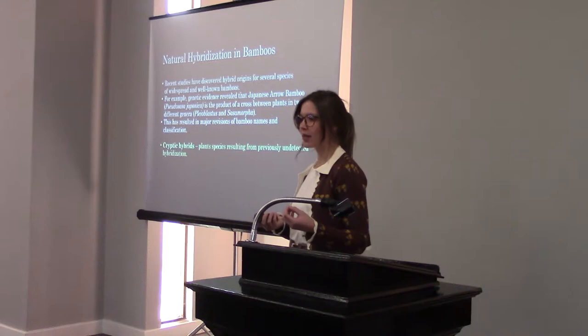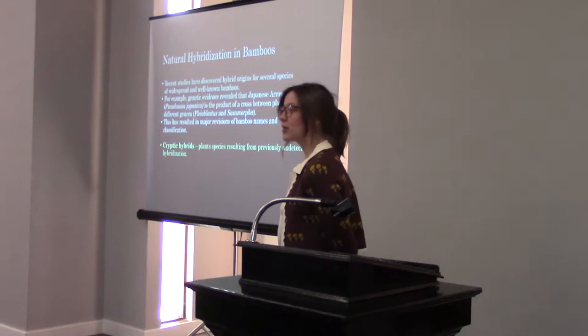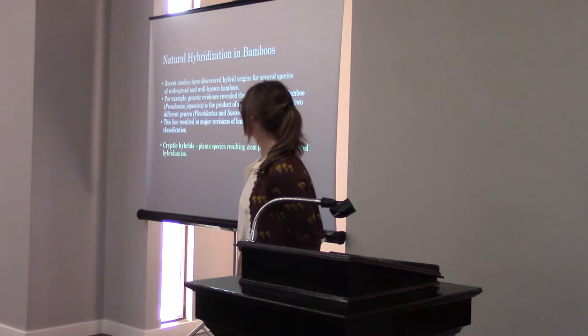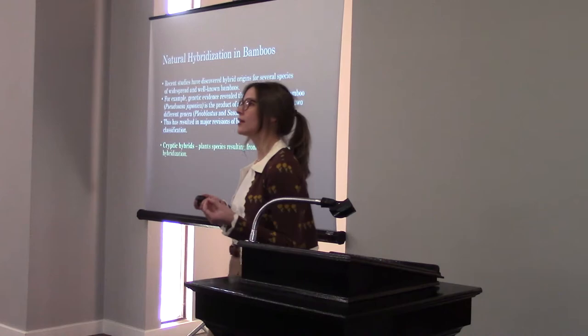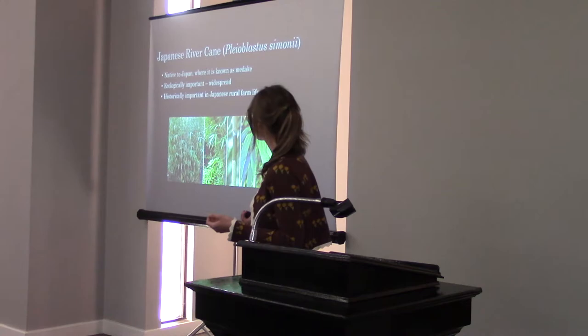Natural hybridization in bamboos hasn't really been thought of as a big deal or very prevalent until recently. For example, scientists found out that Japanese arrow bamboo is actually a product of two distinct parental bamboos, including Pleioblastus and Sasaomorpha. This discovery has led to major revisions of bamboo names and a redo in the classification of bamboo. When we talk about bamboos that we don't think are hybrids but have actually undergone hybridization events in their history, we classify those as cryptic hybrids — and you'll see this term a lot in this presentation.